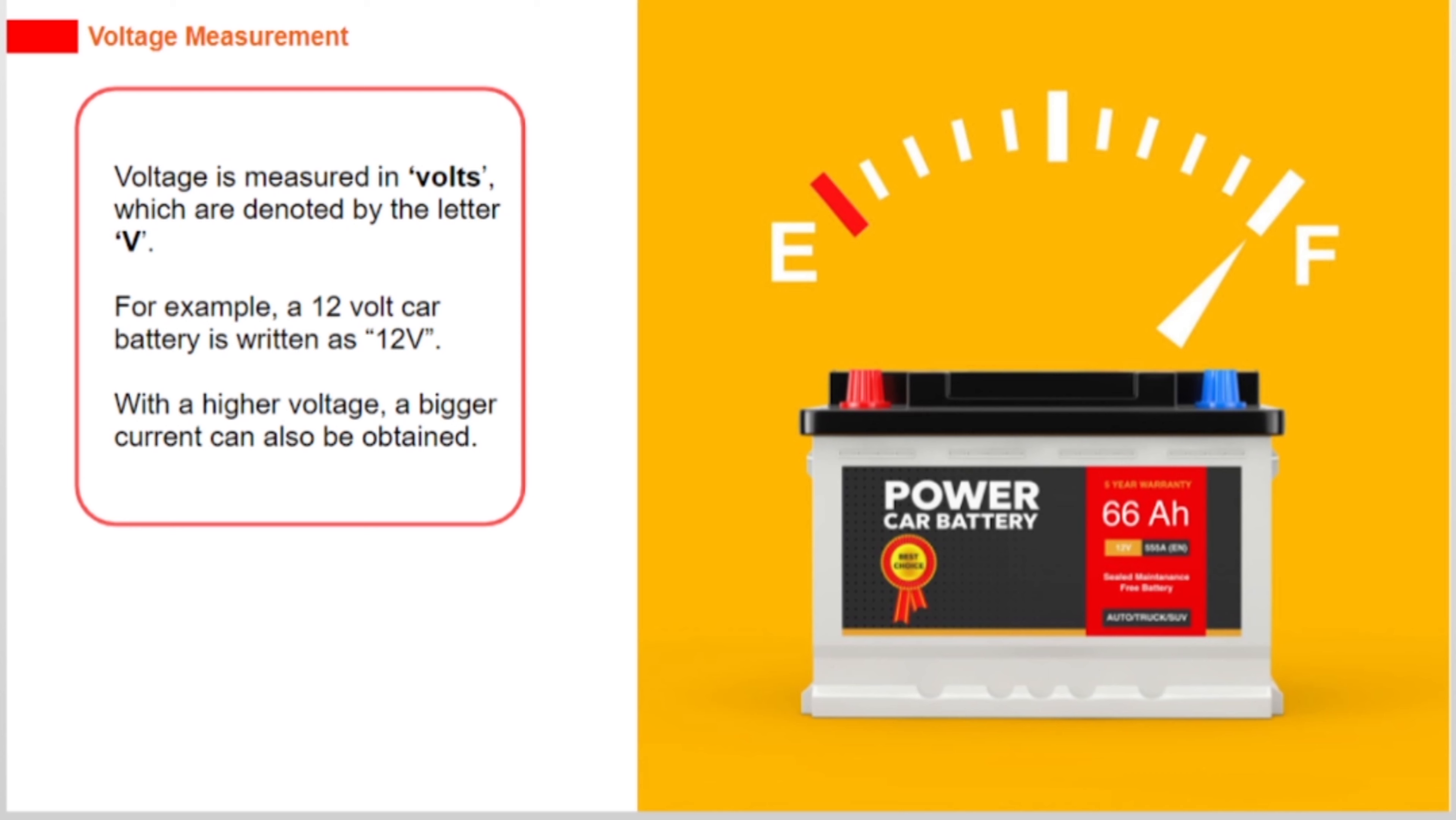The unit of measurement for current is the ampere. The amperes, commonly shortened to amps, are denoted by the letter A.